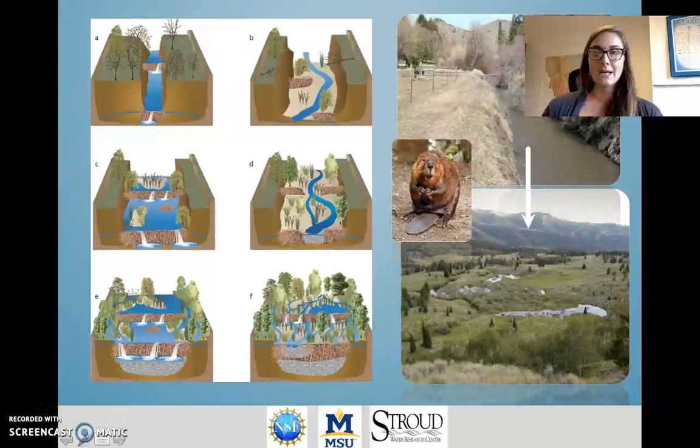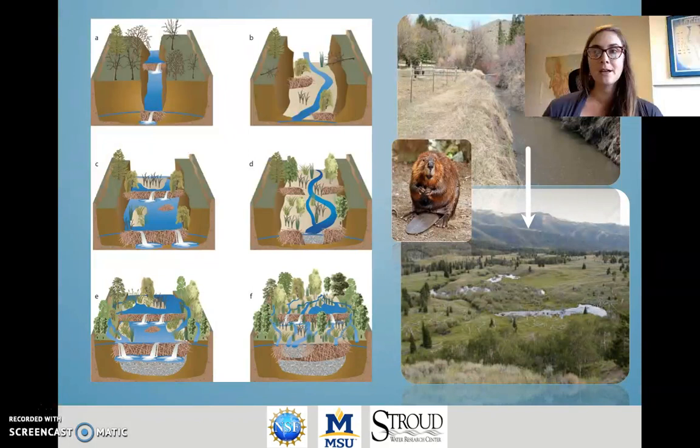Beaver activity can alter the shape of a river channel, allowing a relatively straight and narrow channel that's incised — meaning relatively deep with very high banks — to instead become shallower and start to meander or wind across the landscape, connecting the river channel to its floodplain and to groundwater. This alters sediment sizes and creates variation in flow conditions and water temperature, allowing vegetation to colonize and multiply and create a thriving ecosystem.